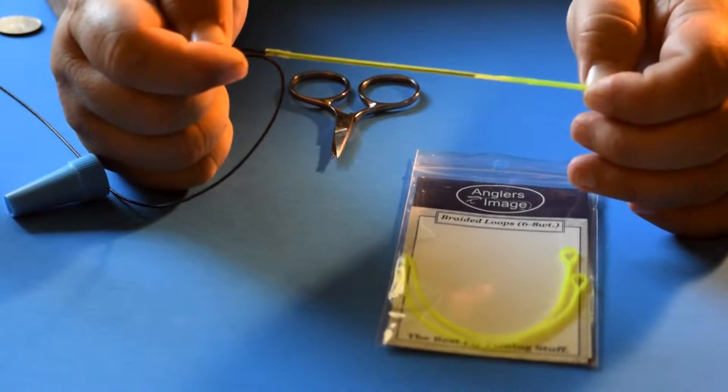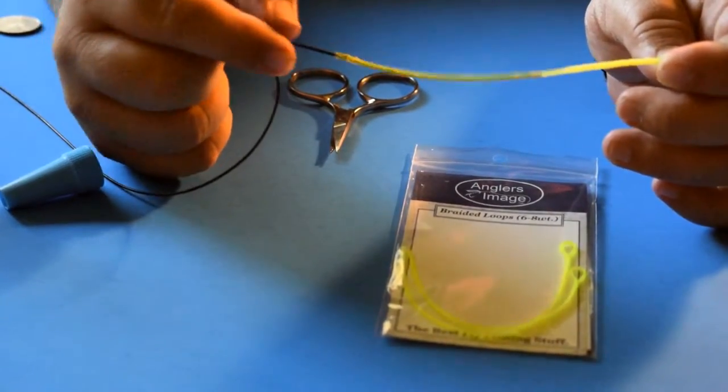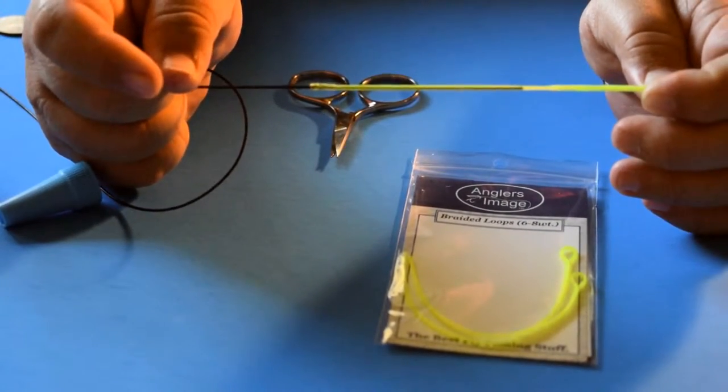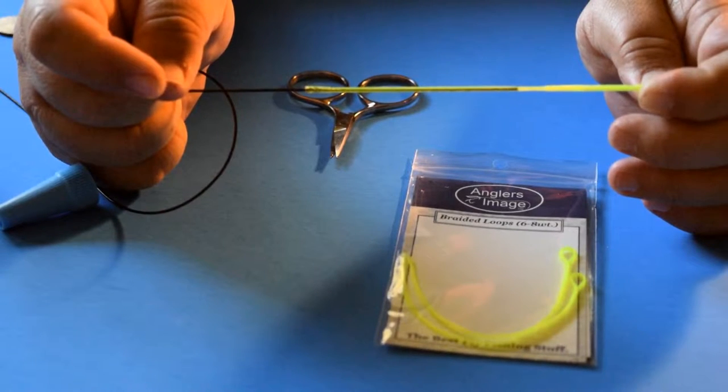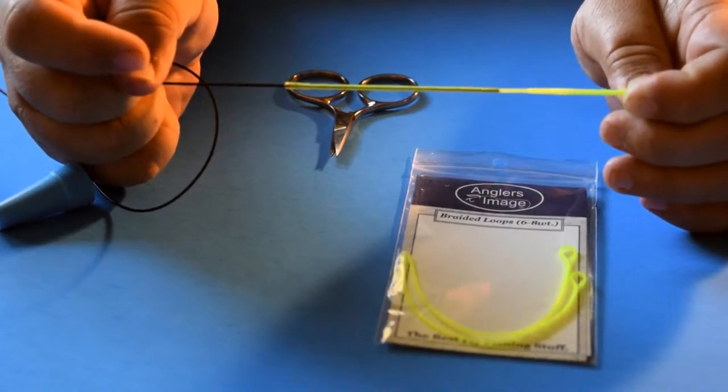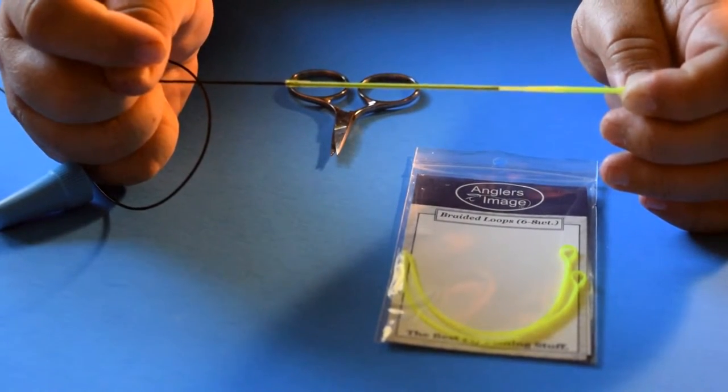So that's how I install them. It's pretty much the way everybody installs them. Once again, they're the Angler Image braided loop. This is the six to eight weight. I have a set I think for five, for below six weight, I think it's three to five weight. And they're seven dollars at Bass Pro Shop.